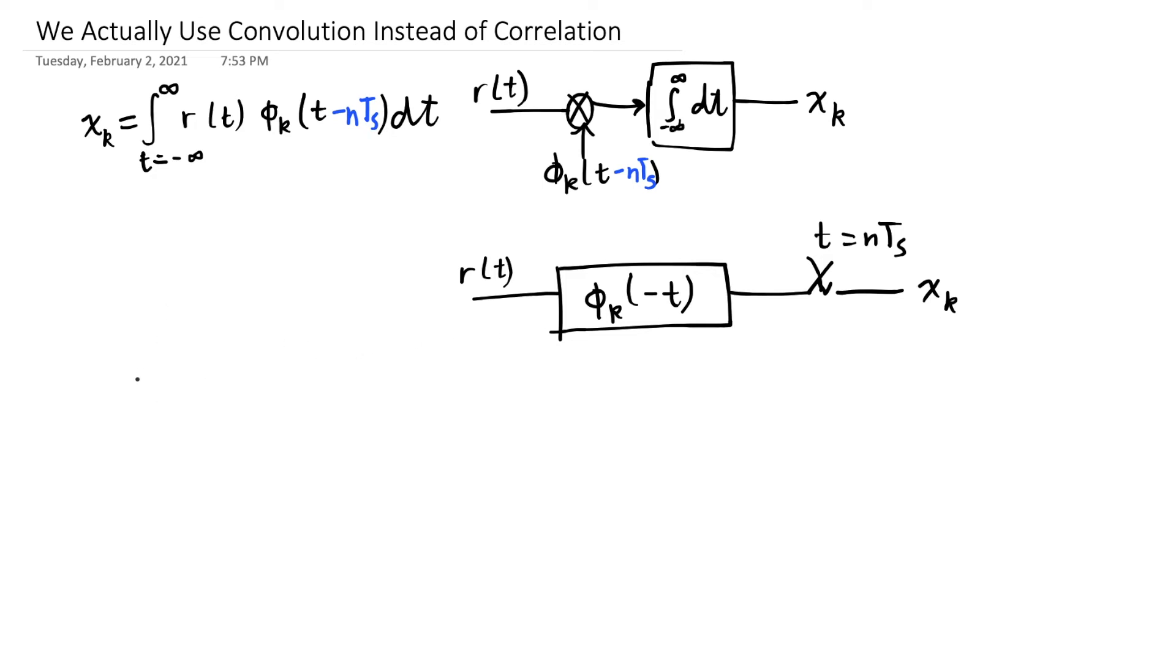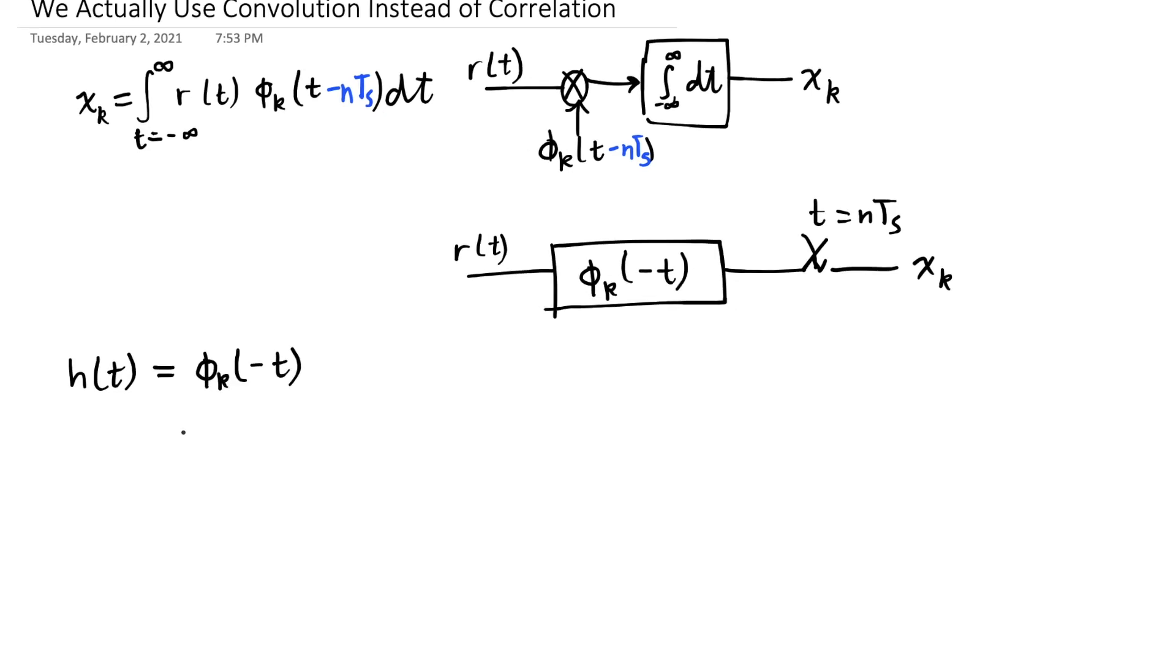Here's why it's the same. Remember that when we have a filter with impulse response, usually we call a filter h of t, and we say it has an impulse response. Here, we're calling it phi k of minus t. That filter does a convolution with the input signal r of t. That is, we get r of t convolved with h of t as the output of the filter.